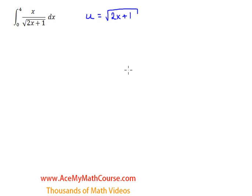We're going to have to find du. To do that, I'm actually going to square both sides here of the equation, so we get u squared equals 2x plus 1.